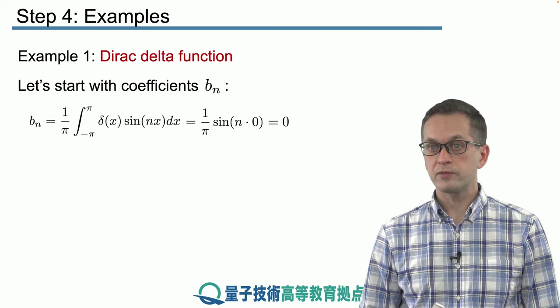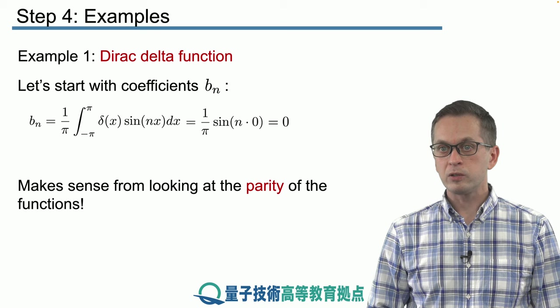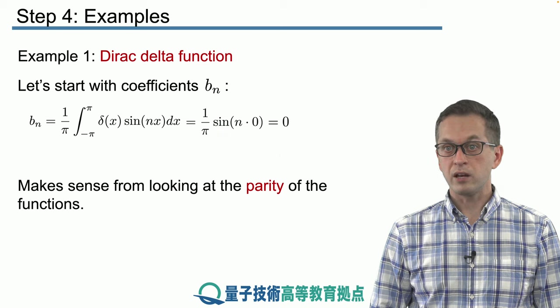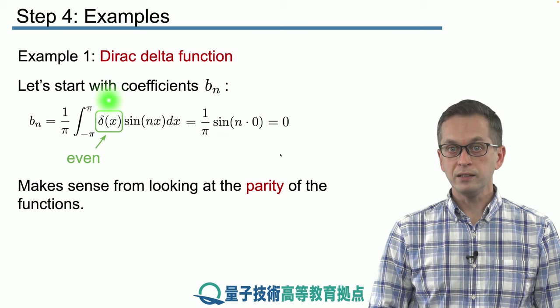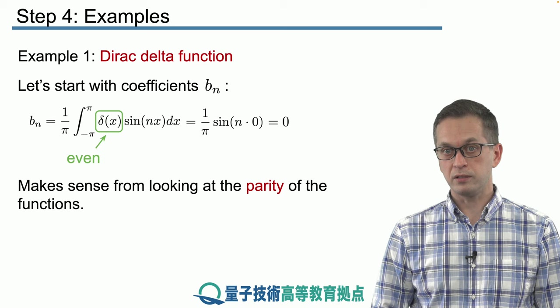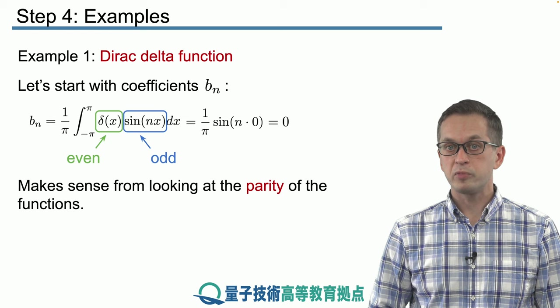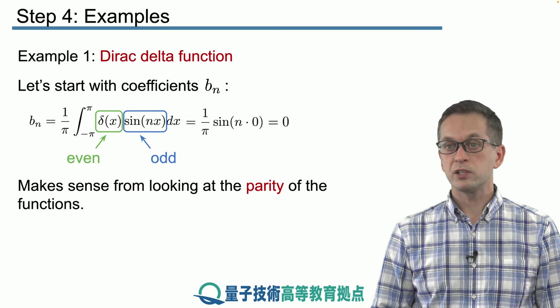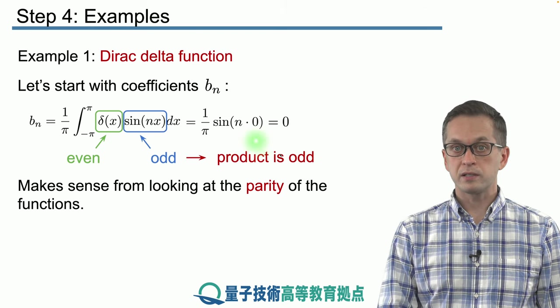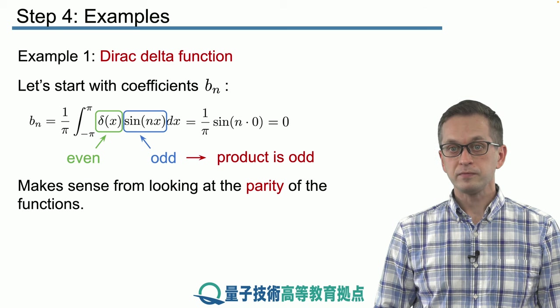So sine of zero is just equal to zero. So all of the coefficients for the sines, all of the bn's in our Fourier series are zero. They vanish. So why is that? We can look at the parity of the functions that are involved. δ(x) is an even function, meaning that δ(x) has the same value as δ(-x). While sine is an odd function, the product of an even function and an odd function is also an odd function. And if we integrate it over this integral from minus π to π, then we get that the integral is zero.